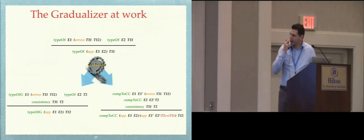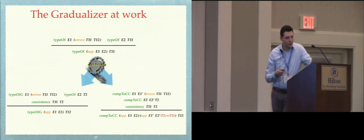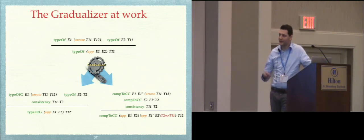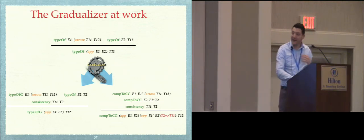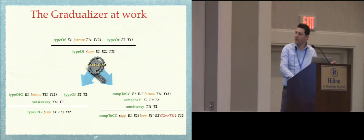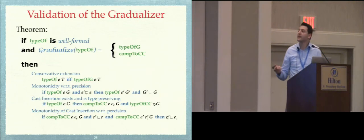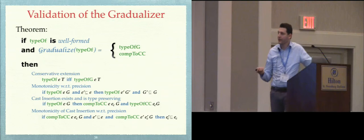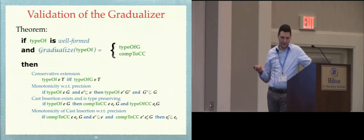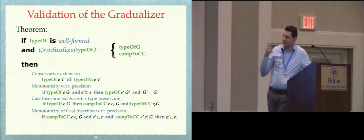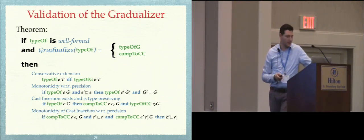The Gradualizer also serves two purposes. First, it shows that the gradualizing process can actually be automated, which is a nice thing — we can make it easy for language designers, maybe with one click. Second, the formal procedures are formal enough to be subject to proofs. Indeed, we proved that what the Gradualizer produces satisfies the correctness criteria of gradual typing, which gives high confidence in using the implementation of the Gradualizer.